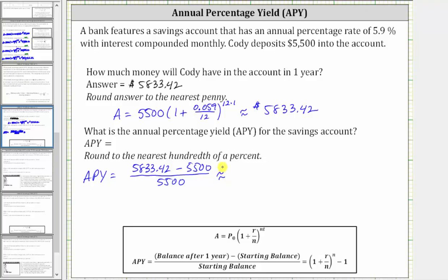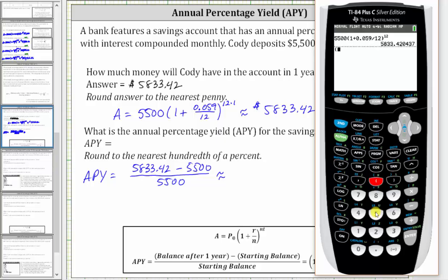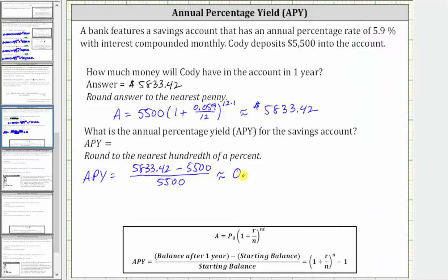Because we're told to round the percentage to the hundredths place value, or two decimal places, and this will give us the decimal form of the percentage, we'll have to round the decimal to four decimal places. So we have in parentheses 5,833.42 minus 5,500, and this difference is divided by 5,500. To four decimal places, this is approximately 0.0606, which as a percentage is 6.06%.